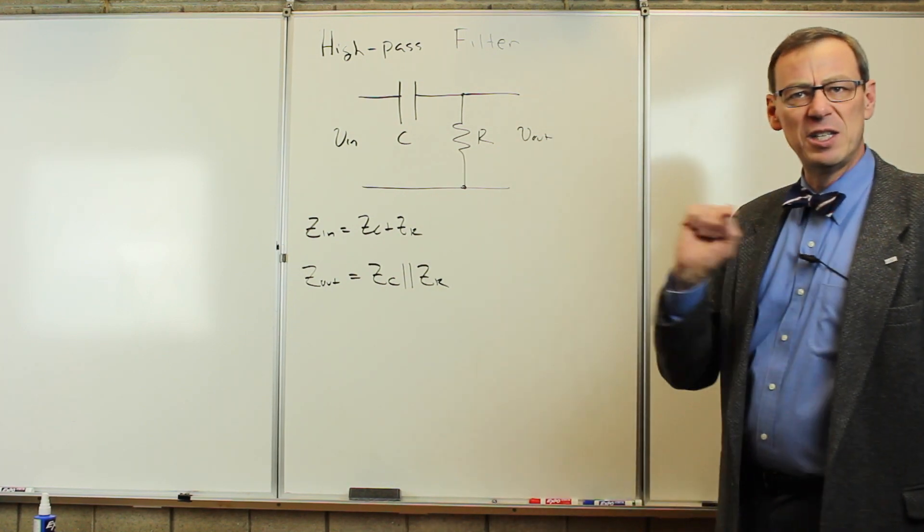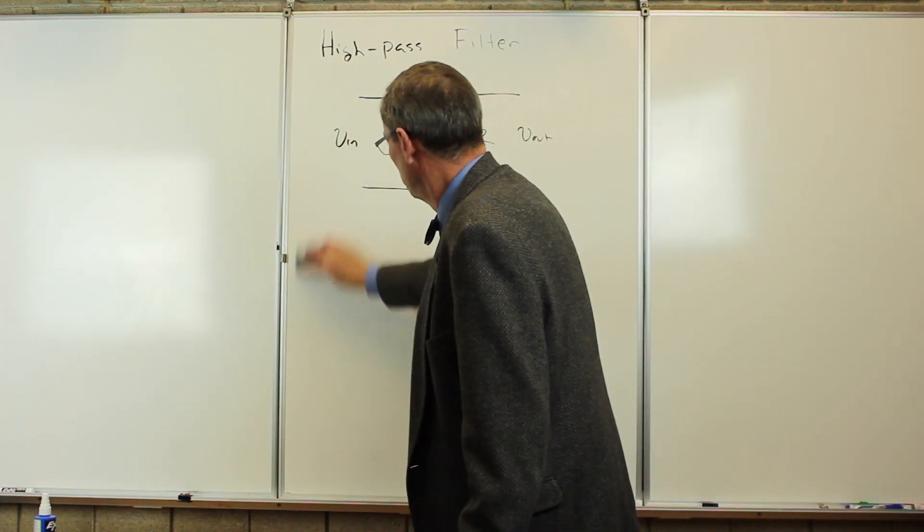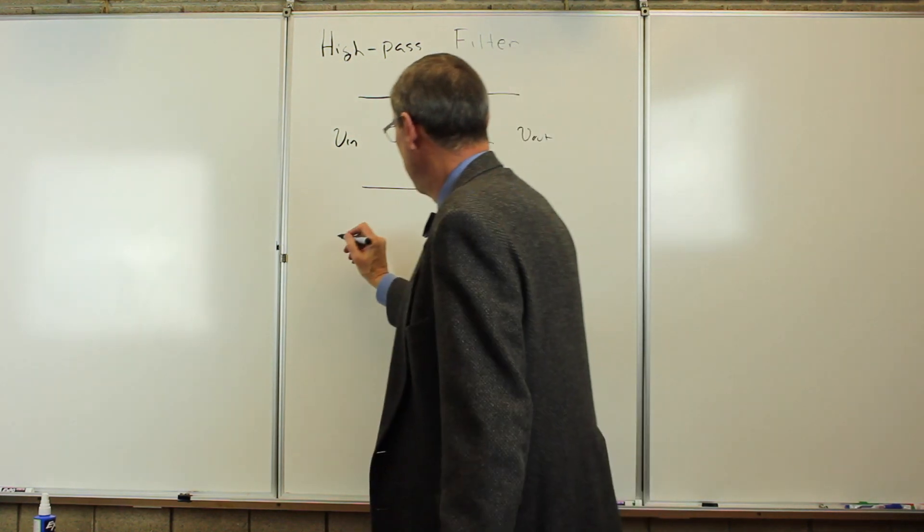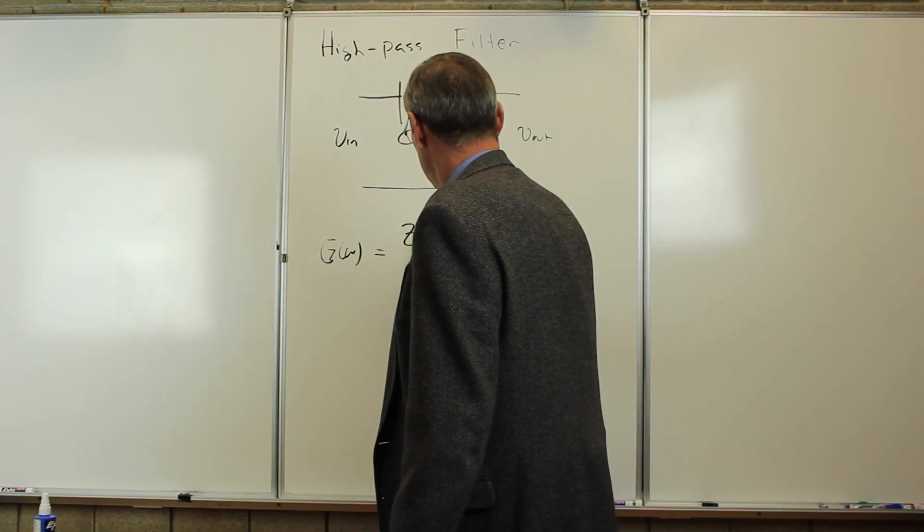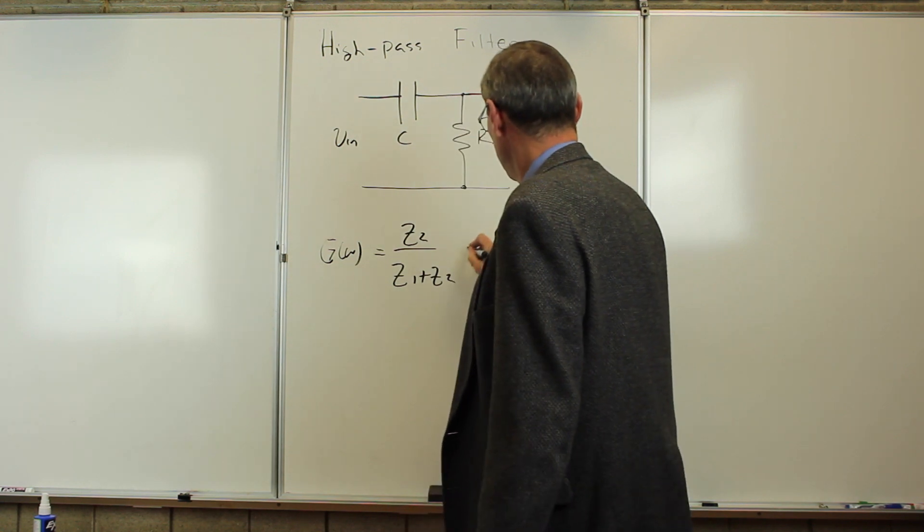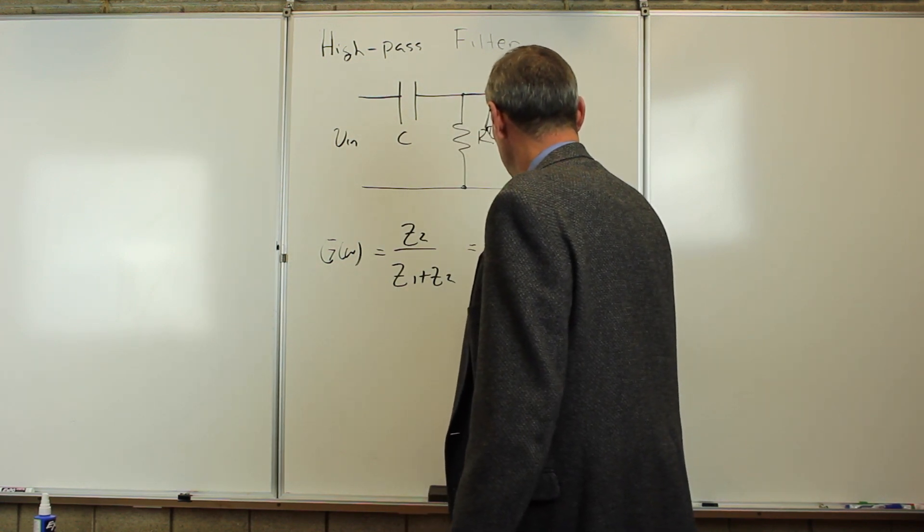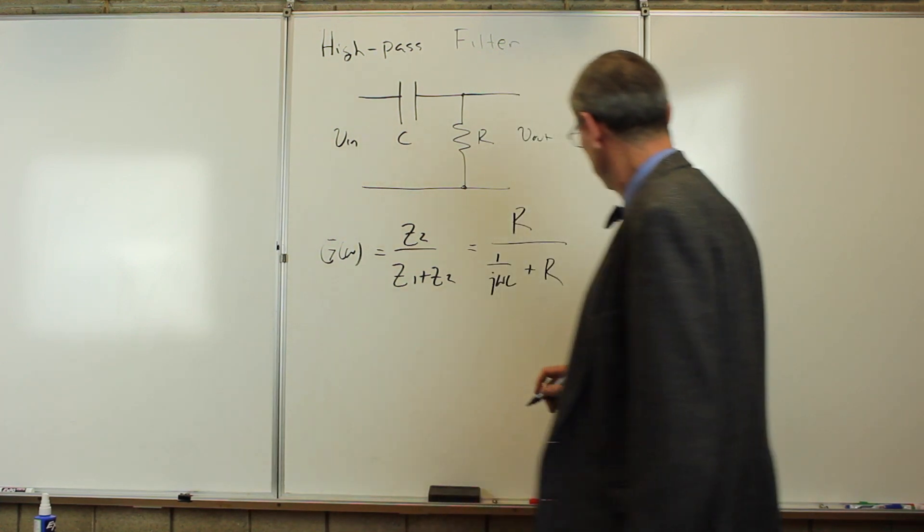What will change is the gain function, so let's take a look at that. The gain as a function of frequency is Z2 over Z1 plus Z2. That's going to now be R, there's Z2, over 1 over j omega C plus R.